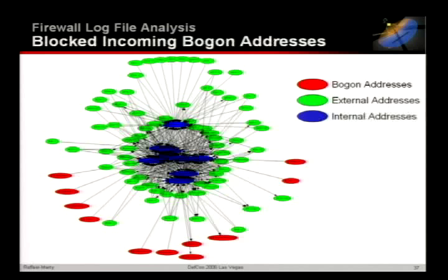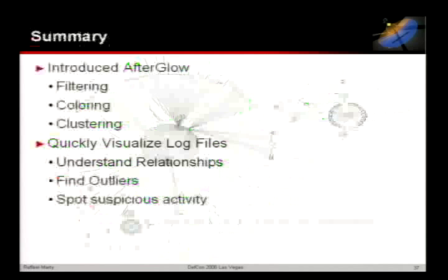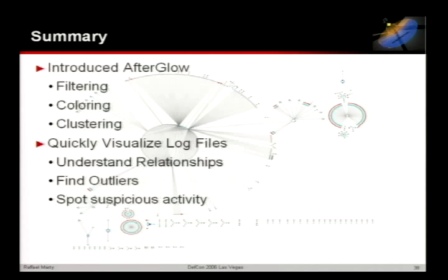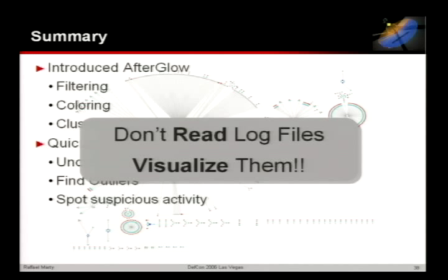Summary: we looked at Afterglow — you can do filtering, coloring, and clustering. Why do all that? I hope I was able to show use cases: finding my port 100 backdoor, finding Bogon address spaces, finding outliers, finding relationships — who is talking on the network. People use Afterglow to find connections from countries of concern, suspicious activity. So don't read log files — visualize them.